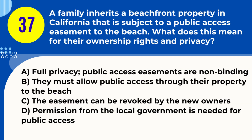Question 37. A family inherits a beachfront property in California that is subject to a public access easement to the beach. What does this mean for their ownership rights and privacy? A. Full privacy; public access easements are non-binding. B. They must allow public access through their property to the beach. C. The easement can be revoked by the new owners. D. Permission from the local government is needed for public access. Answer: B. They must allow public access through their property to the beach. Explanation: Inheriting a property in California with a public access easement to the beach means the owners must allow the public to use the easement, impacting their privacy.